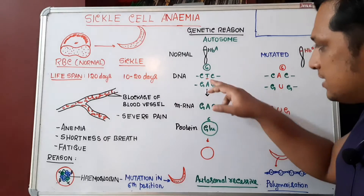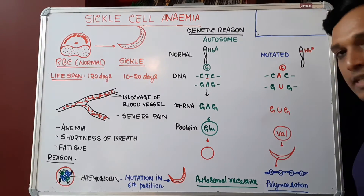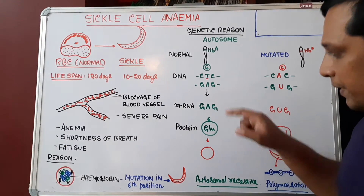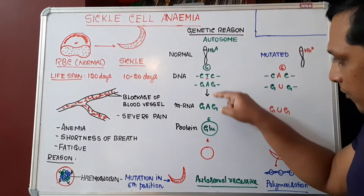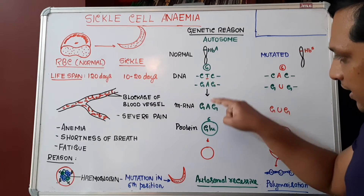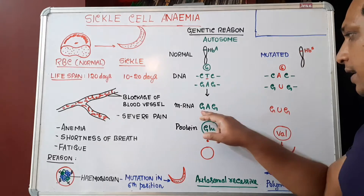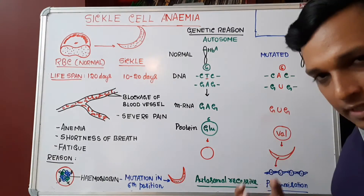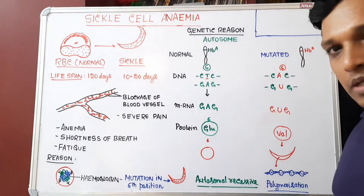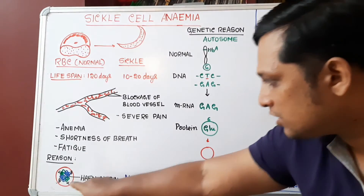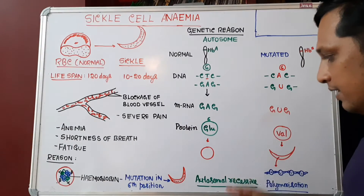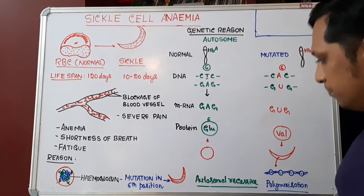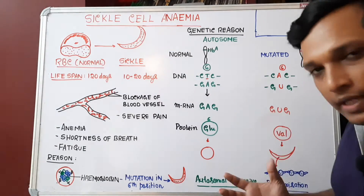CTC is on the template strand, and GAG is on the coding strand, because DNA is double-stranded. During transcription, the message is copied to messenger RNA from the template strand only, using complementary base pairing. The mRNA carries GAG — that is the normal message. When there is a normal message, normal protein is formed. At the sixth position of the beta globin chain, glutamic acid is produced, and the RBC will be biconcave disc-shaped.